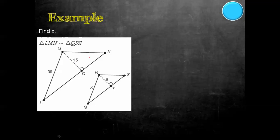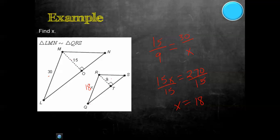Here we want to find X. We're given the altitudes 15 and 9, and the corresponding sides ML and RQ. Starting with the altitudes: 15 over 9 equals 30 over X. Cross-multiplying gives 15X equals 270. Dividing by 15 gives X equals 18. So the side length of RQ is 18.